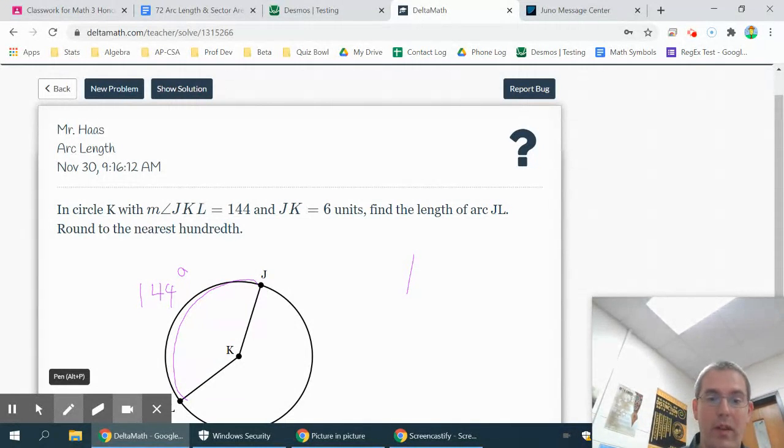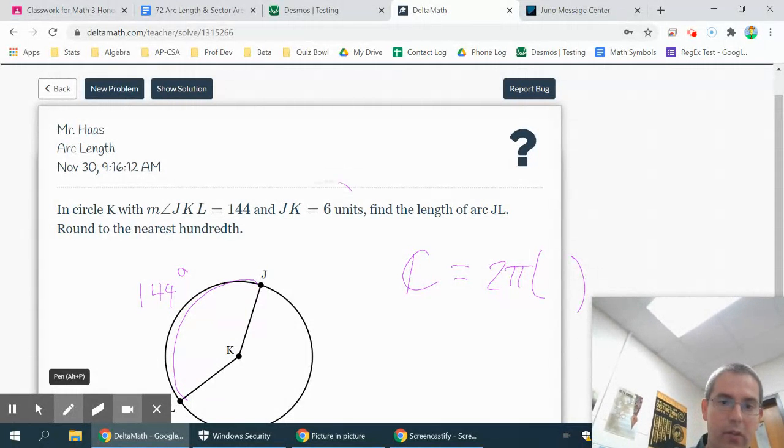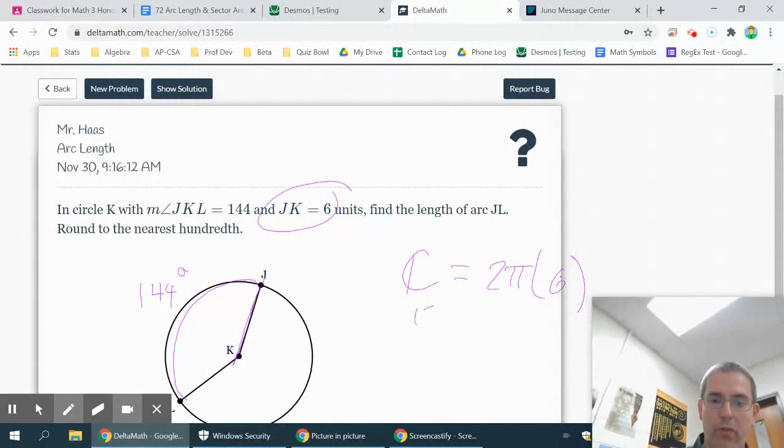So to find arc length, we're going to start by finding the circumference of the circle. Circumference of a circle is 2πr. In this case, the radius is 6 because this is the radius. You can tell that JK is the radius of the circle. So that's going to give you a circumference of 12π.